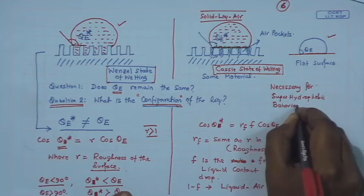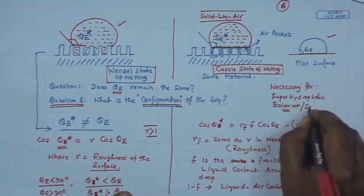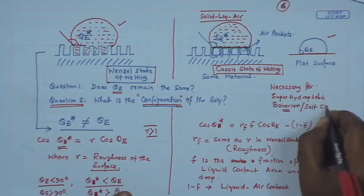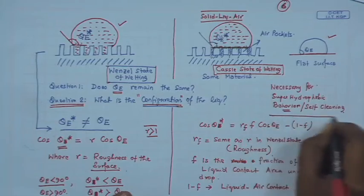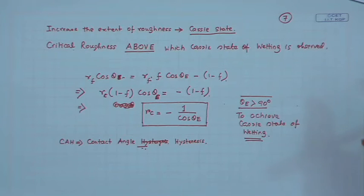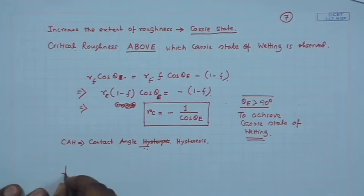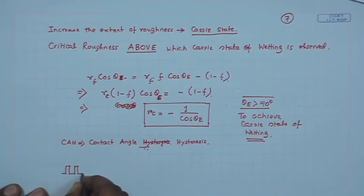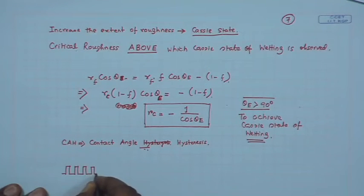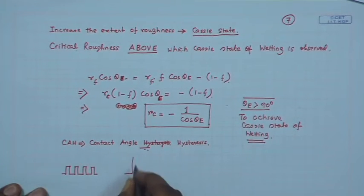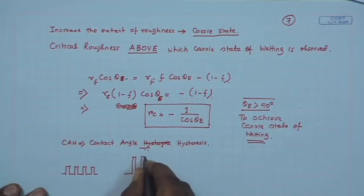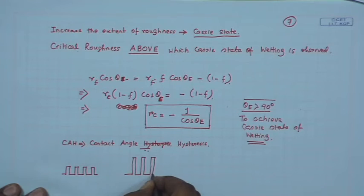I have not yet defined super hydrophobic behavior or self-cleaning property. From a simple equation, there is a critical roughness only above which the Cassie state of wetting is possible. So if you have different types of structures on the same material, you need to consider whether the roughness is sufficient to achieve the Cassie state.